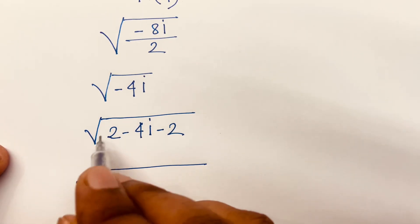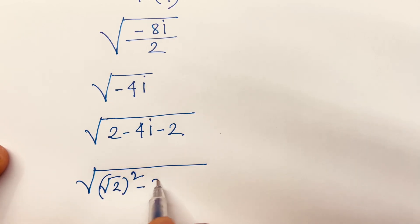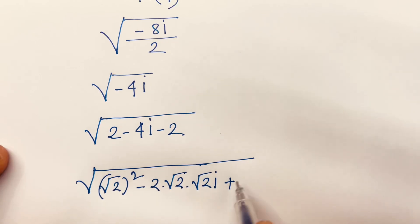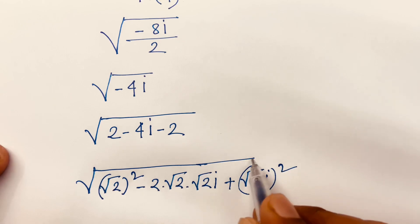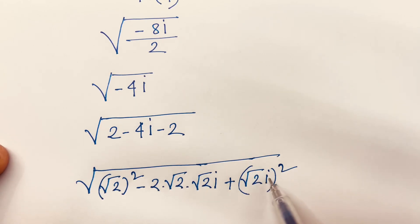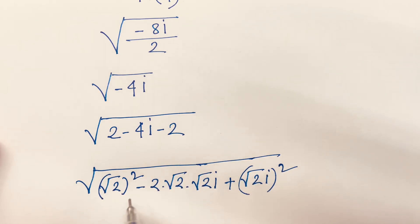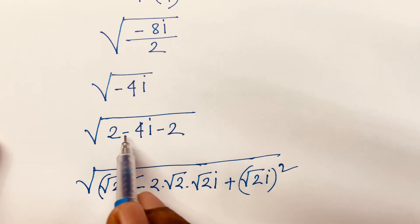Then square root — it will be square root 2 whole square, minus 2 times square root 2 times i, plus square root 2 times i, whole square. Look, the square root is cancelled and i squared is minus 1. So here is minus 2 and here is minus 2. And square root 2 times square root 2 will be 2, so 2 times 2 equals 4i, and square root 2 is cancelled, giving 2. So this line and this line are the same.